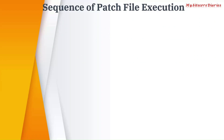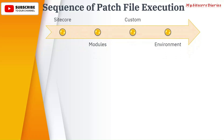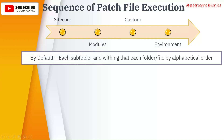The sequence of patch file execution is as follows: first, the Sitecore layer is executed, then the Modules layer, then the Custom layer, and finally the Environment layer. By default, within each layer, files within each subfolder are loaded in alphabetical order. So within Sitecore, subfolders are processed alphabetically, and within each subfolder, files are also processed alphabetically. The same applies to Modules, Custom, and Environment. Since Environment is last, any environment-specific configuration will override everything else.